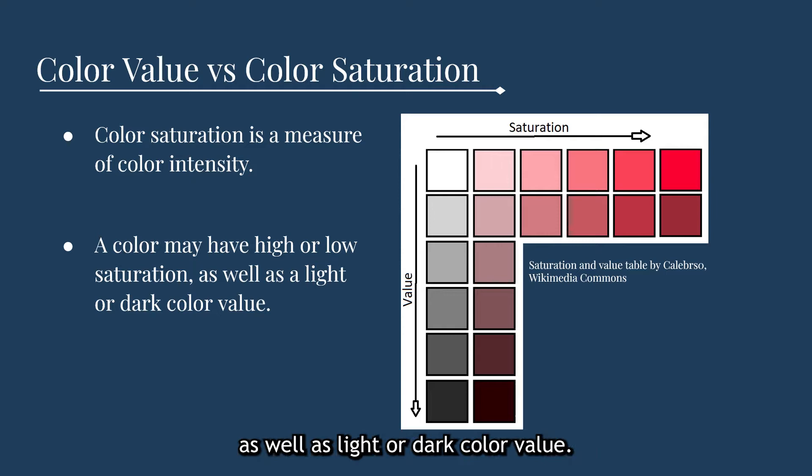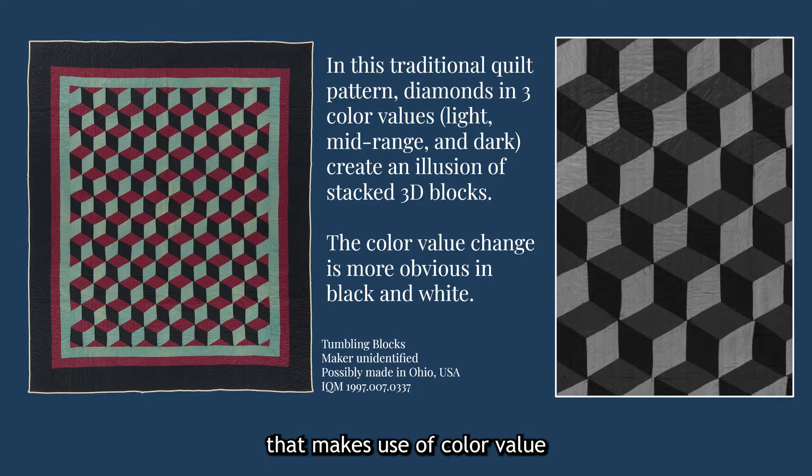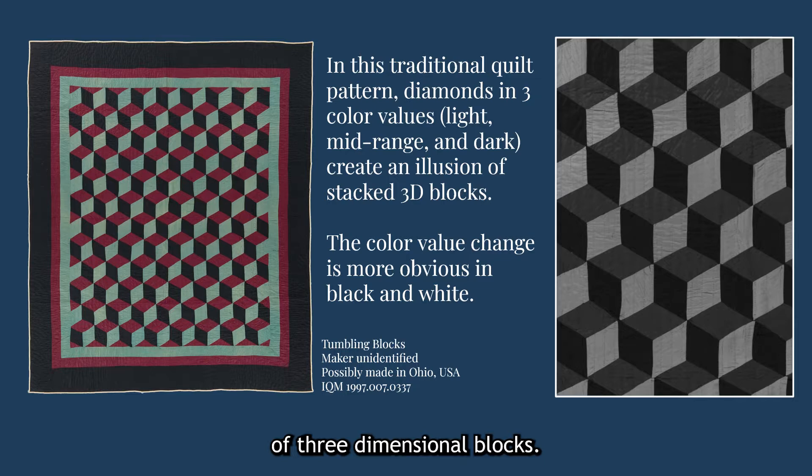One traditional quilt pattern that makes use of color value is the tumbling blocks pattern. In this pattern, quilt makers piece together fabric diamonds of three different values in order to create an illusion of three-dimensional blocks. This value change is often emphasized by changes in color as well, which you can see in this example, where one side of each block is black, one is red, and one is a pale green.